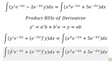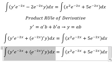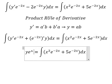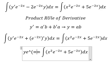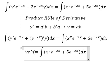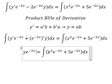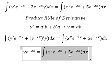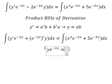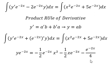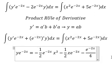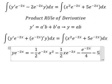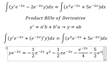After integrating, we have y times e to the power of negative 2x. For the integration of this side, we use integration, and we get negative 5 over 2 times e to the power of negative 2x.